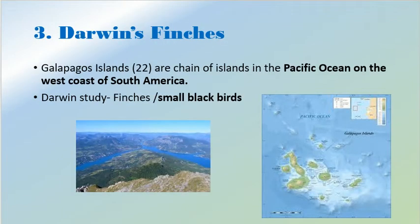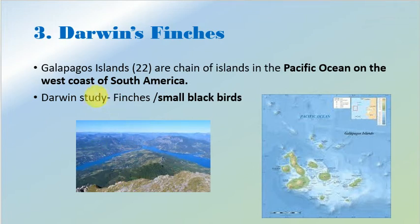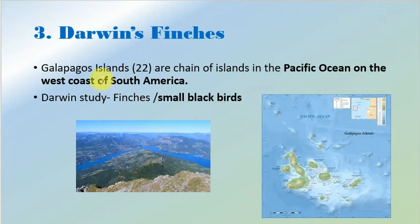The third under the geographical evidences is Darwin's finches. As we all know, Darwin did lots of work on the different species of finches, and he studied mainly in the Galapagos Islands. The Galapagos Island is a unit of 22 smaller islands — it is not a single island but a chain of islands seen in the Pacific Ocean on the west coast of South America. In the Galapagos Island, Darwin mainly studied finches, which are also known as small black birds.